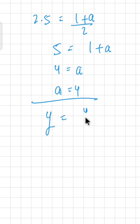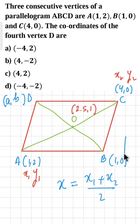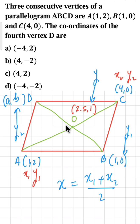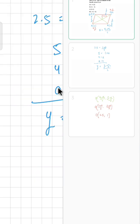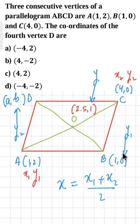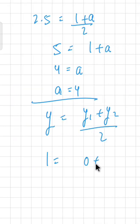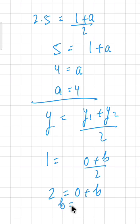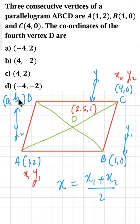Now applying the second midpoint formula: y = (y1 + y2)/2 — we use this to find the ordinate. Coming back to BD: the ordinate of O is 1, the ordinate of B is 0, and the ordinate of D is b (unknown). So y = 1. Writing: 1 = (0 + b)/2. Multiplying both sides by 2: 2 = 0 + b, so b = 2. Therefore A = 4 and B = 2, meaning D has coordinates (4, 2).